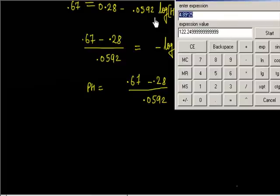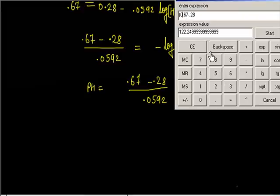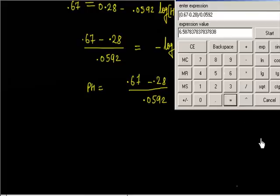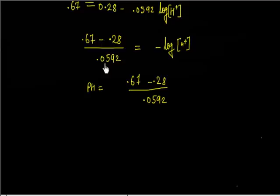Calculating: (0.67 − 0.28) / 0.0592 = 0.39 / 0.0592, which comes out to be 6.58. So the pH is approximately 6.58, which is close to neutral. Checking this value gives 6.61 — almost the same. So this is almost neutral pH, and we can say the solution is slightly or weakly acidic.